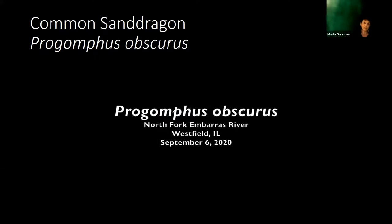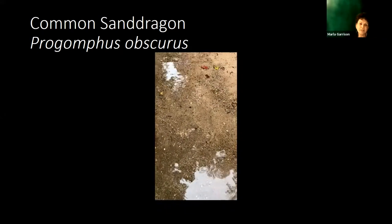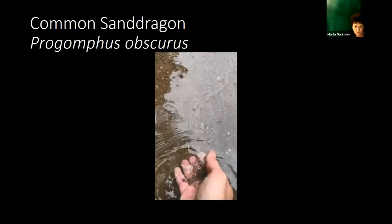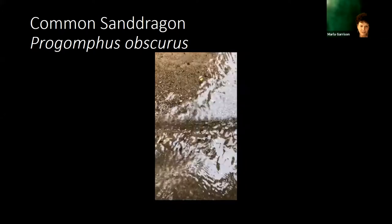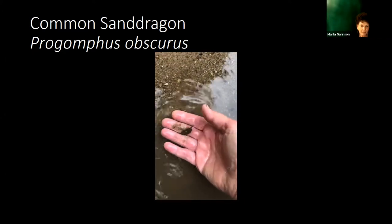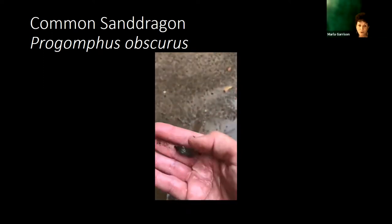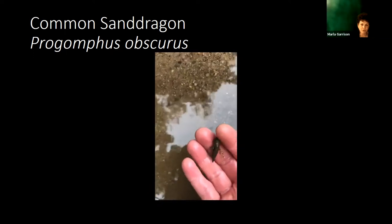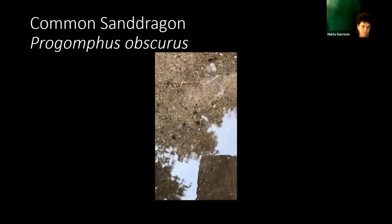Here's a quick video of Progomphus obscurus, the common sand dragon. Last fall during COVID I went out to a river in central Illinois that had a lot of Progomphus nymphs, and you can see those trails or tunnels on the sandbar just under that shallow clear water. I followed those trails with my hand and pulled up a Progomphus obscurus. This nymph is about the only one you'll ever find in the Midwest on these sandy sandbars in shallow water in that coarse sand and gravel. Its body type is cylindrical and well-tapered, its head is shovel-shaped — it's built like a bulldozer for burrowing and creating those tunnels. Watch it disappear — tunneling straight down.